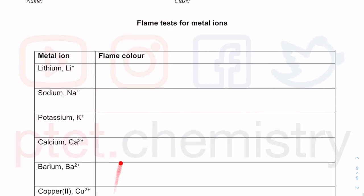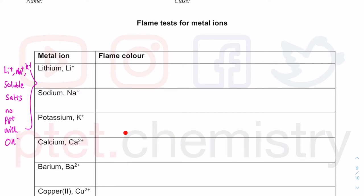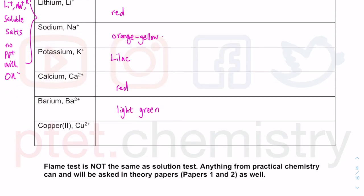These are the table results for the flame test colors — additional tests to identify cations. Li⁺, Na⁺, and K⁺ form soluble salts so there is no precipitate with OH⁻, making them very difficult to identify by precipitation. But from the flame color, very easy to identify. Potassium was lilac; calcium was orange-red; sodium was yellow. Barium 2+ is like a light green. Copper 2+ gives a blue-green flame. Be very careful — the flame test is not the same as the solution color test.